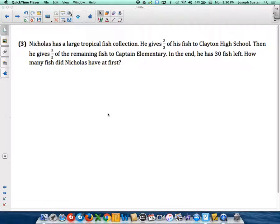Nicholas has a large tropical fish collection. He gives two-thirds of his fish to Clayton High School, then he gives two-fifths of the remaining fish to Captain Elementary. In the end, he has 30 fish left. How many fish did Nicholas have at first?